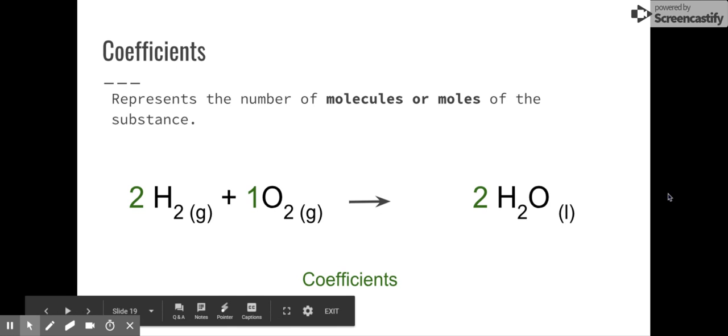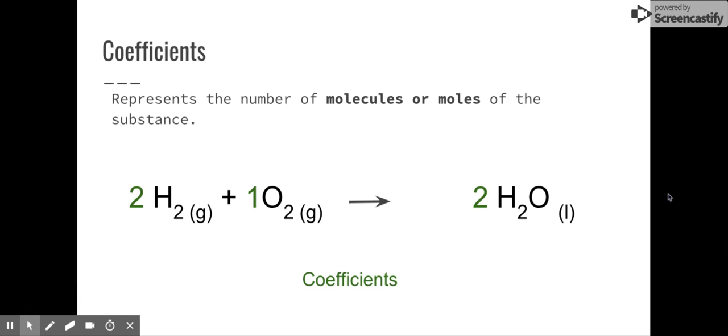Now you'll notice that there are numbers up in front of each of these molecules. These represent coefficients, and they just represent the amount, either in the number of molecules or moles of a substance. So here in this equation, we can say we have two hydrogen molecules. That's two sets of H2 and one oxygen molecule. That's one set of O2. Now we'll talk about coefficients in the next module where we talk about the law of conservation of mass, but I do want you to know that they're called coefficients right now, and you're going to see them every once in a while. Now note that they also could just represent moles. This is two moles of hydrogen, because moles is just the SI unit or the standard unit of quantity.